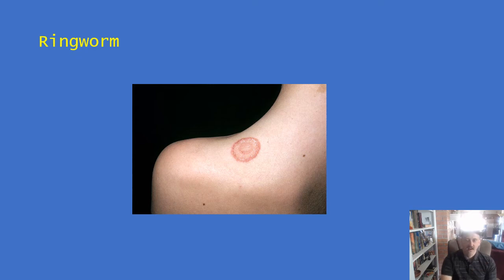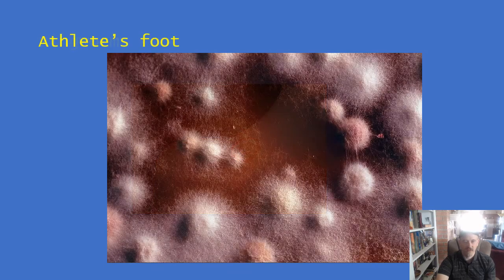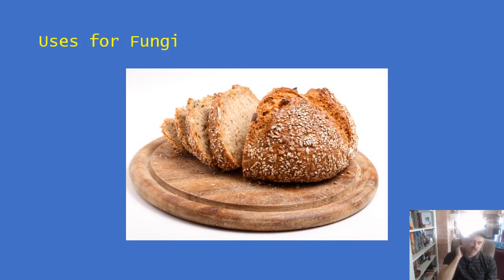Ringworm — it's not really a worm. It's a human infection caused by a fungus. It gets into livestock and dogs as well. It's a fungus living on or under the skin; its hyphae extend out causing this characteristic appearance. It's a parasite. Athlete's foot is another example of a fungus that we are often attacked by.